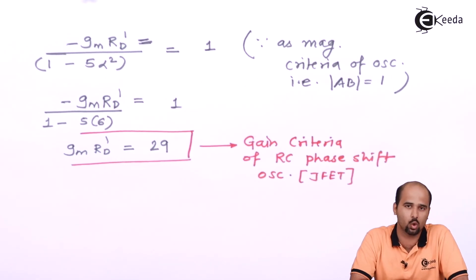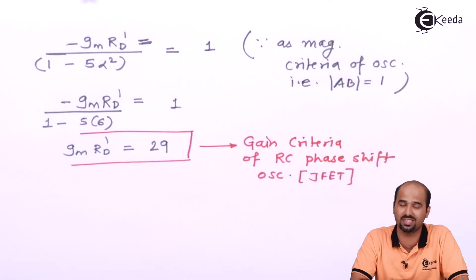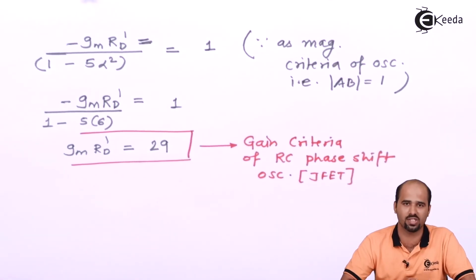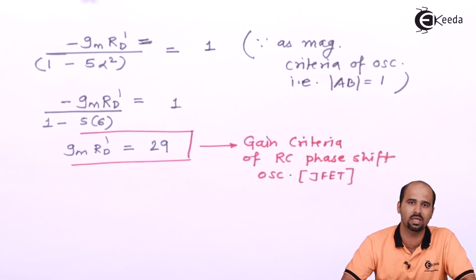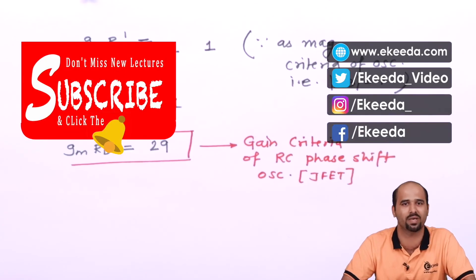We can conclude that the frequency of oscillation is f₀ = 1/(2π√6 RC) and the gain of this oscillator must satisfy GM·RD-dash equals 29. In further videos we will learn the Wien bridge oscillator and the LC phase shift oscillator as well. Thank you so much for watching. Subscribe to Ikeda videos. Thank you.